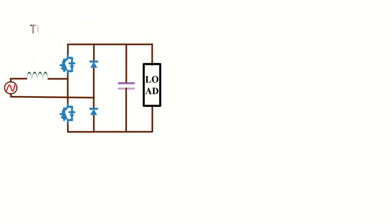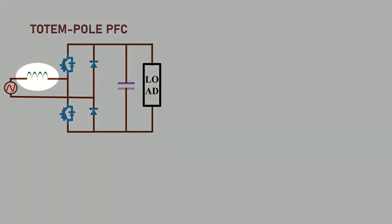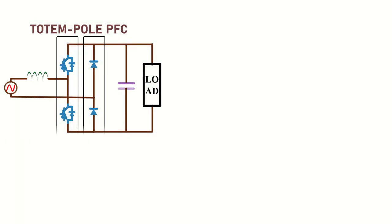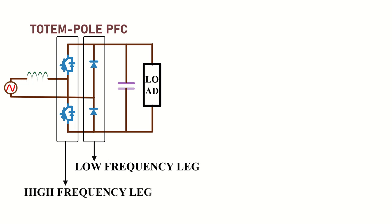This is the basic topology of a totem pole PFC converter. There is an inductor which is connected in series with the AC input voltage. There are two legs in the converter. One is called the low frequency leg and other one is called the high frequency leg.